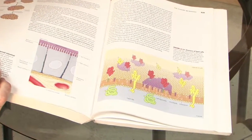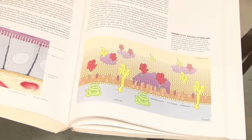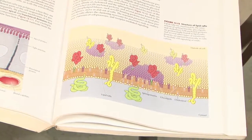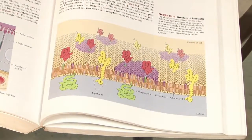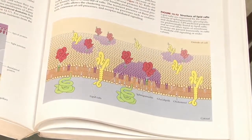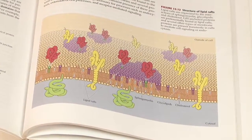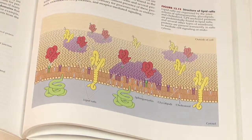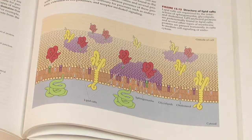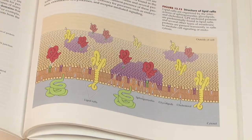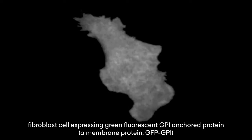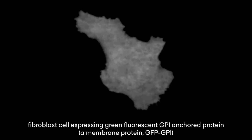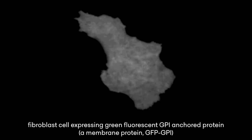According to this model, the cell membrane is a two-dimensional fluid in which lipids and proteins diffuse. Our current understanding of plasma membrane organization has evolved from this fundamental idea to a more complex picture. Here we have a cell expressing a fluorescently tagged GPI-anchored protein on its membrane.